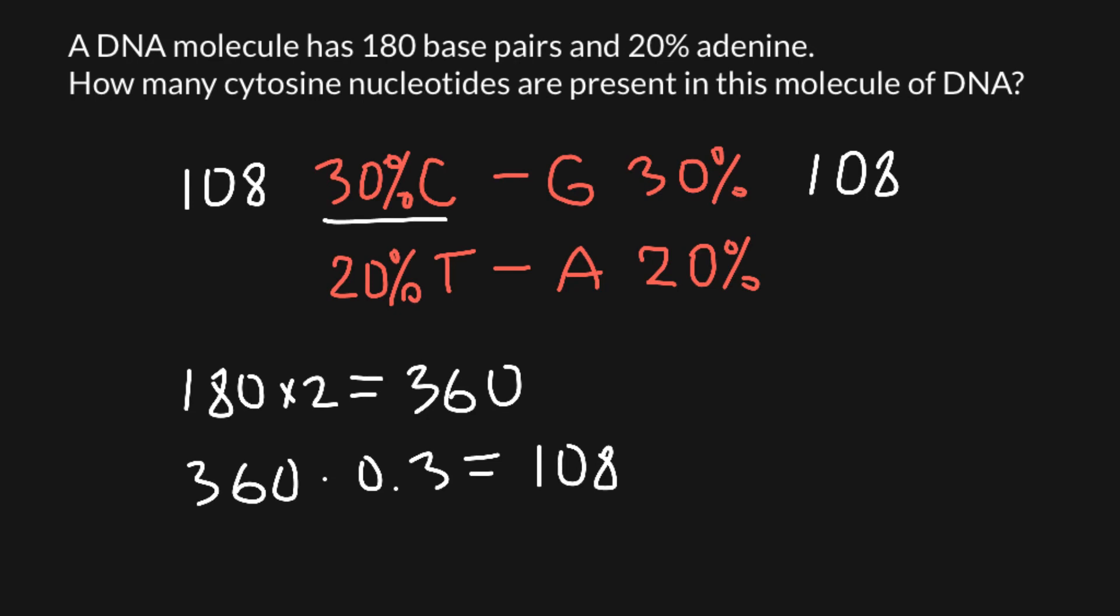And in order to find the number of thymines and adenines, we have to multiply 360 by 0.2. And the answer would be 72. So 72 here and 72 here.